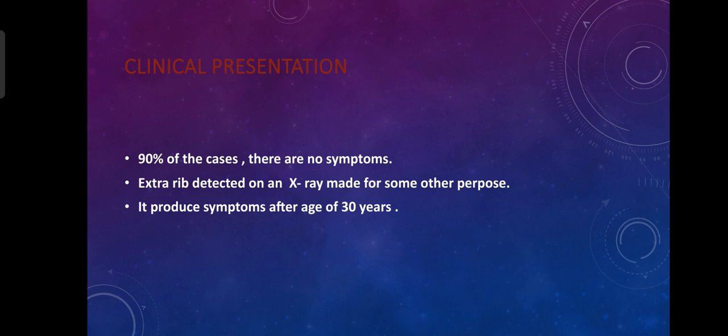The cervical rib is usually unilateral and is more common on the right side. Regarding clinical presentation, in 90% of cases there are no symptoms — the extra rib is detected on an X-ray taken for some other purpose.